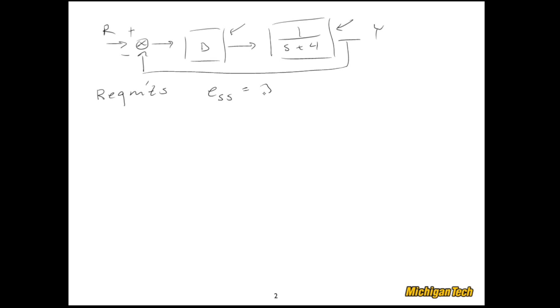And how about we have a couple. Let's say that the steady state error has to be equal to 0 when the reference input is a unit step. And the percent overshoot needs to be less than 10% when the reference input is a unit step.